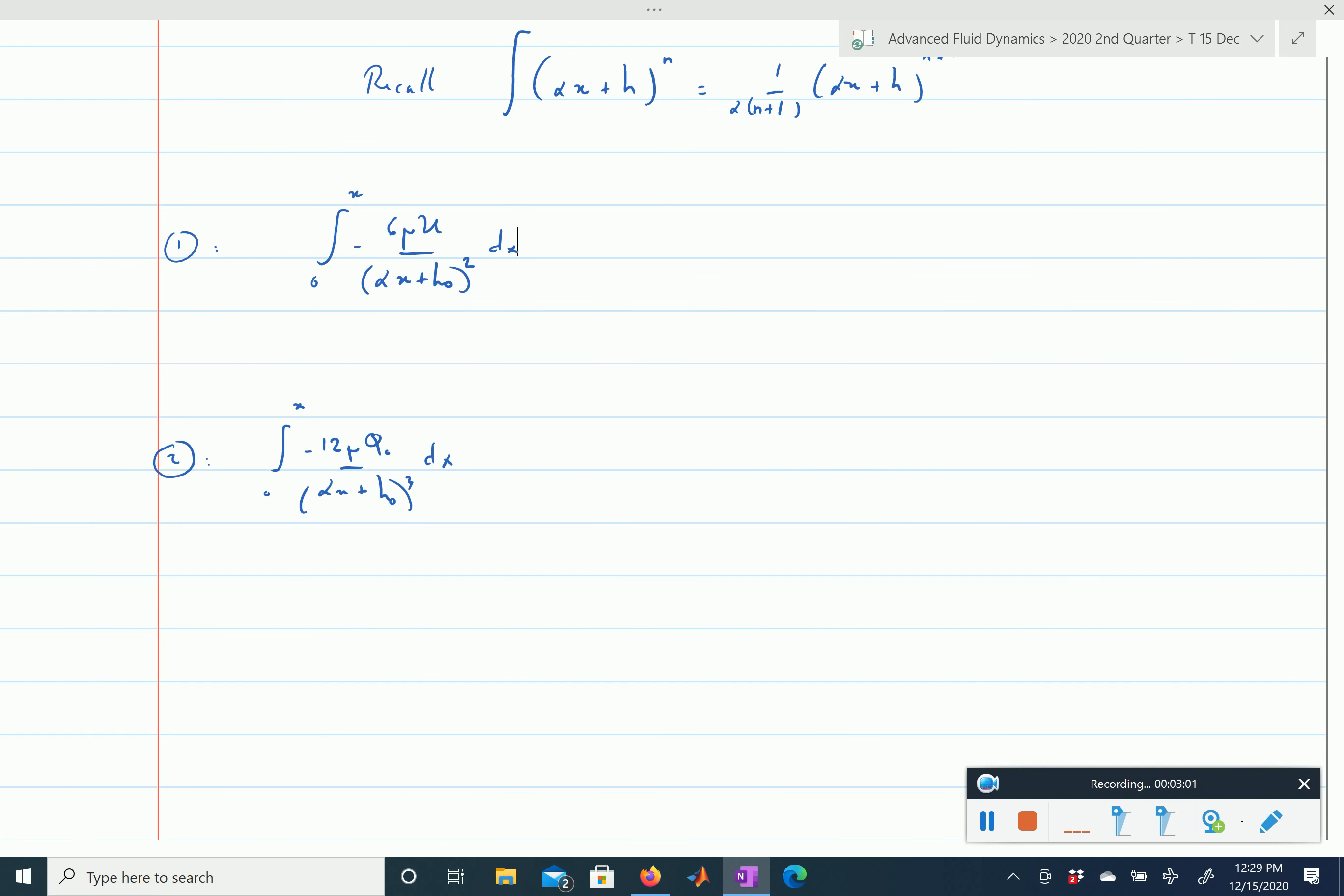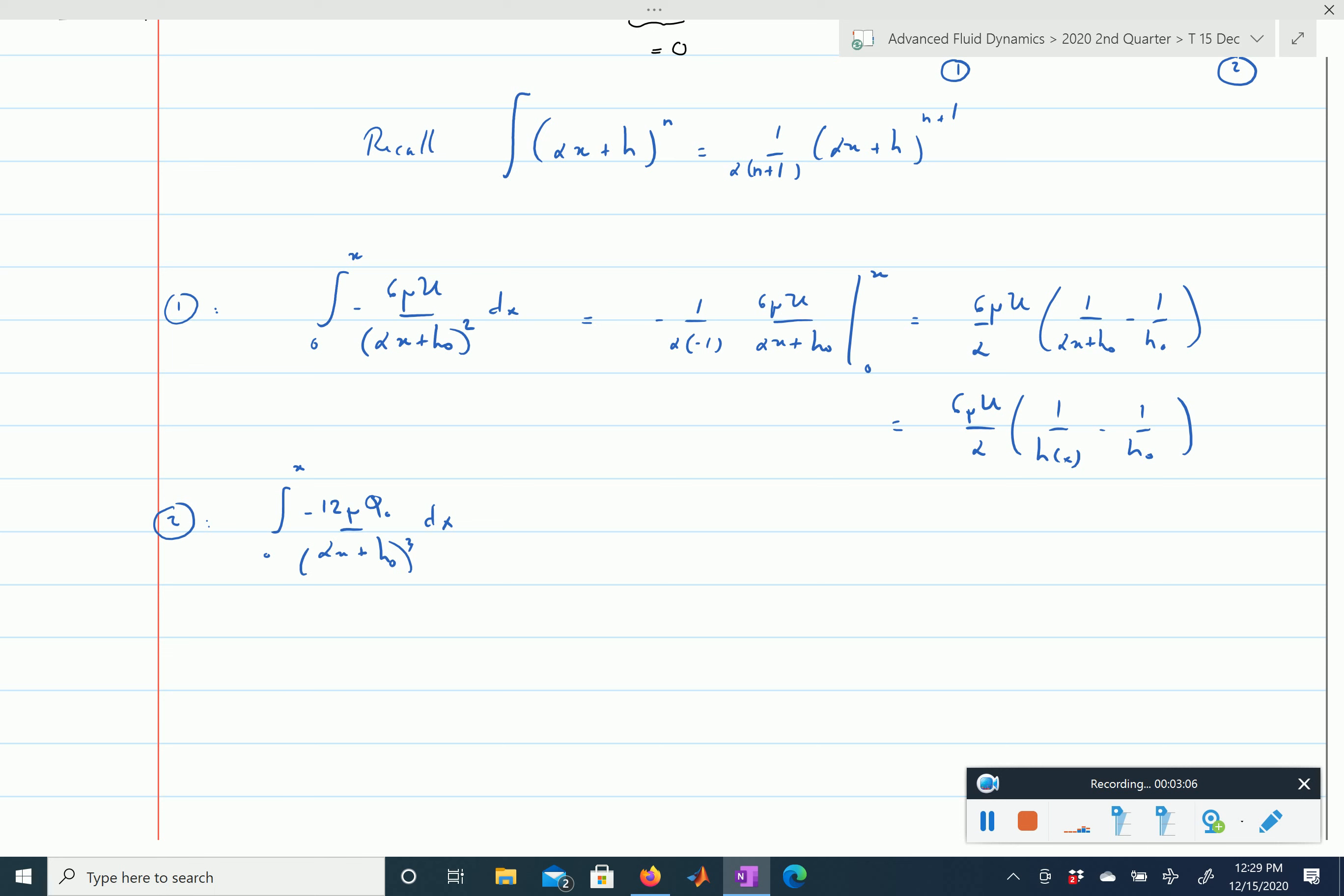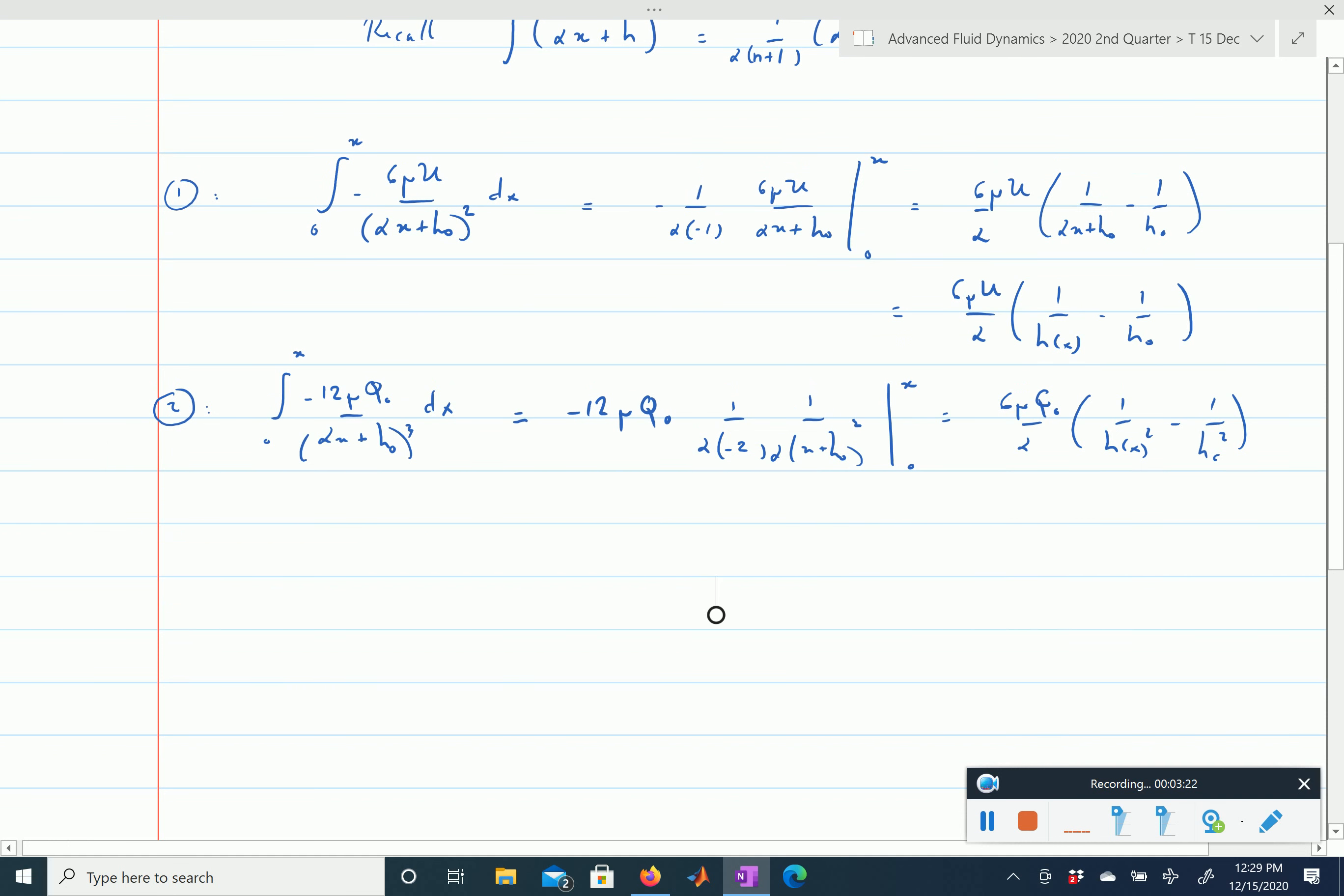So let's take the first integral. I just wrote the integral here, in the end you'll find that this integral is equal to 6 mu u divided by alpha 1 divided by hx minus 1 divided by h0, so if x is equal to L this will be a 1 divided by h1. And the second integral here is simply equal to 6 mu q0 divided by alpha 1 divided by hx squared minus 1 divided by h0 squared.